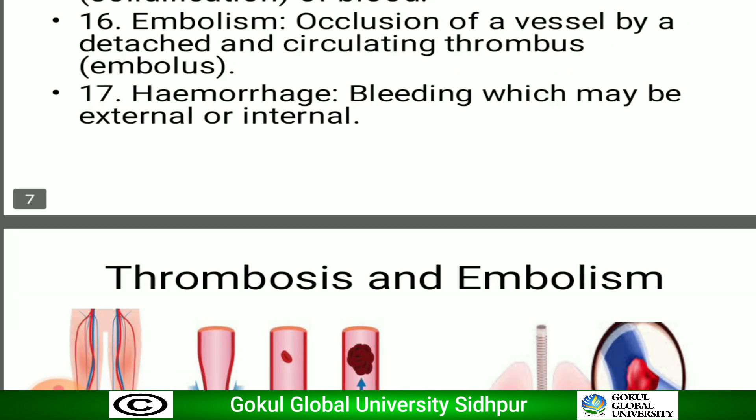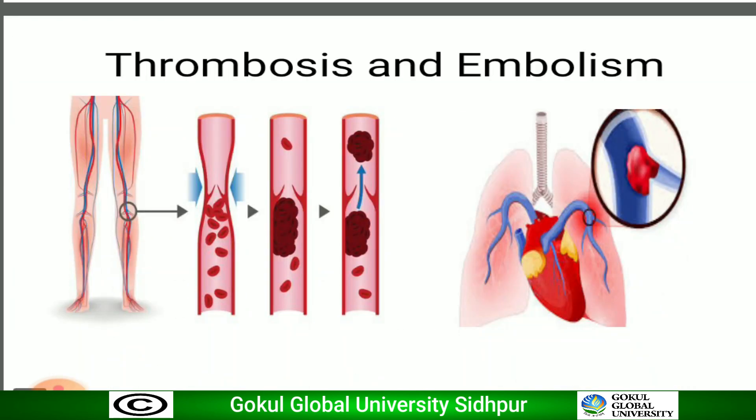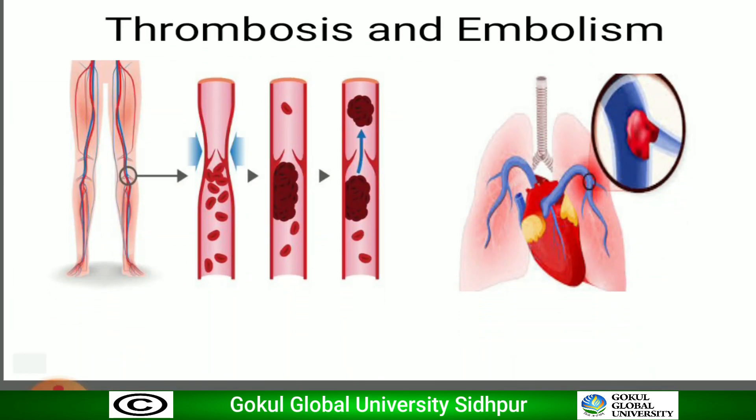The first diagram shows solidification or coagulation of blood — that is thrombosis. The second diagram of the lung shows occlusion of a blood vessel due to a detached thrombus — this is termed embolism.